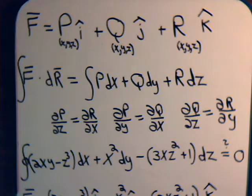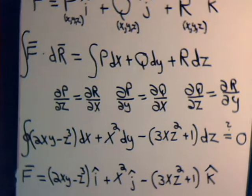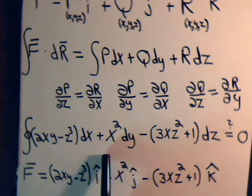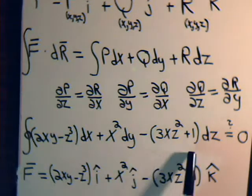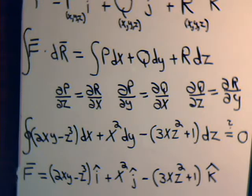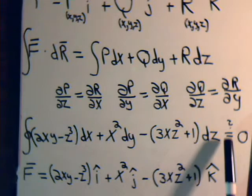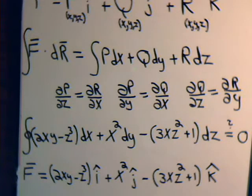We had an example in the previous video where this is P, this is Q, and this is R. We left off with the question: if we have an exact differential and we're taking the closed line integral, does it have to be equal to zero? We know that if we're in two dimensions and we have an exact line integral, it must indeed be equal to zero.